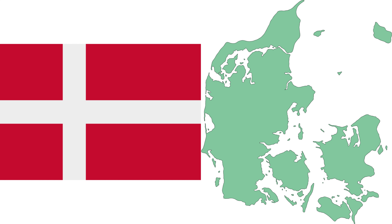In 1973, Denmark, together with Greenland but not the Faroes, became a member of what is now the European Union, but negotiated certain opt-outs, such as retaining its own currency, the Krone.